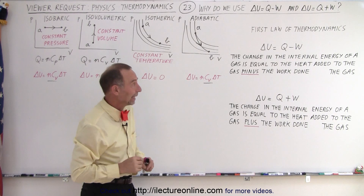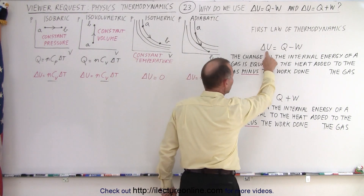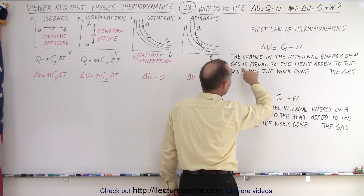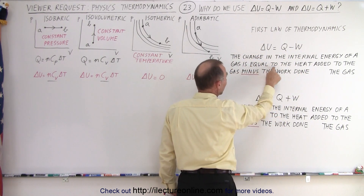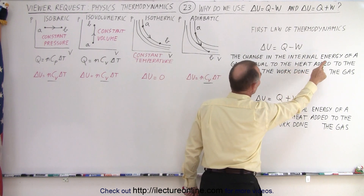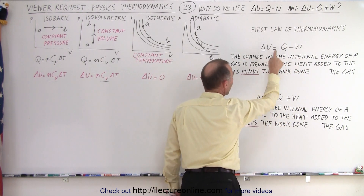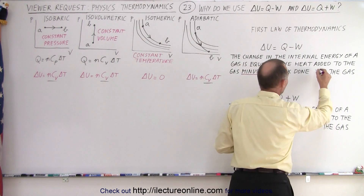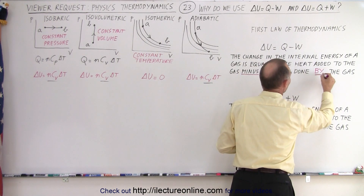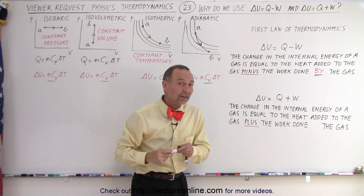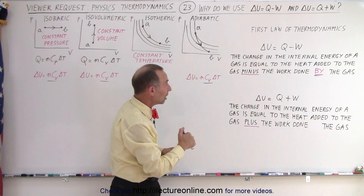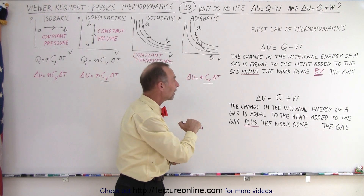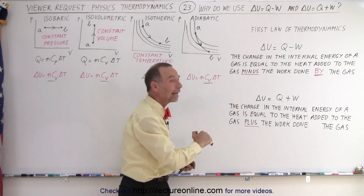So let's read the definition. In the case of delta U equals Q minus W, it is the change in the internal energy of a gas, which is delta U, is equal to the heat added to the gas, which is Q, minus the work done — and here's the key word — by the gas. So if we define it as follows: the change in internal energy of a gas is equal to the heat added to the gas minus the work done by the gas.